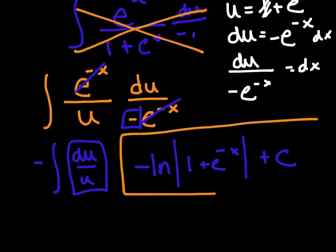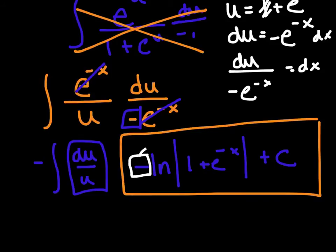Here's where the AP loves to mess with you. There are three ln properties: multiply, divide, and power. On the AP exam they love those properties — they could move this negative up to the exponent, rewriting the answer as ln of (1 + e^(−x)) to the negative 1 plus c. You're probably not wrong; you just may need to apply ln properties to match the answer choices.